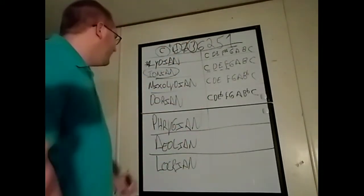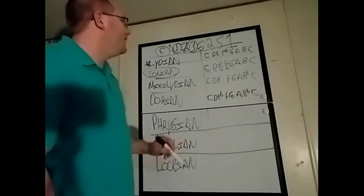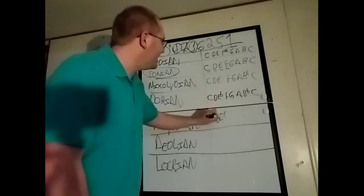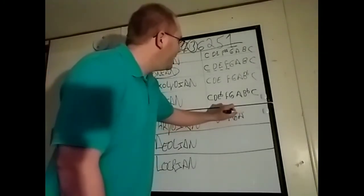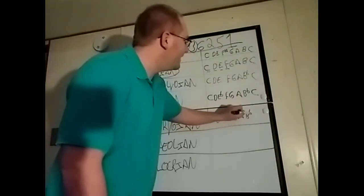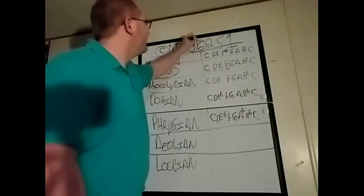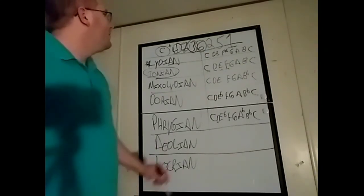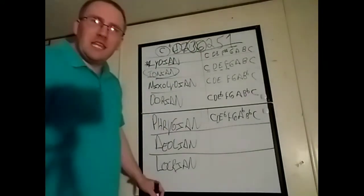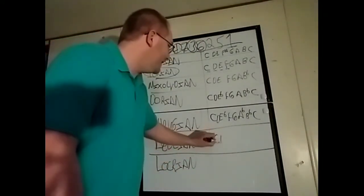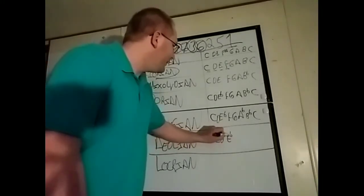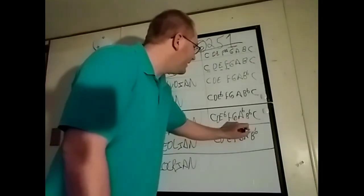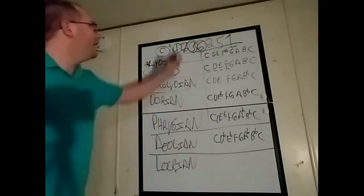Now, we're at the 6, Phrygian. What we need to do is flat the 6. So, we have C, D, E flat, F, G, A flat, B flat, C. It takes care of that 6. Now, we have Aeolian, which we have to flat the 2. So, we have C, D flat, E flat, F, G, A flat, B flat, C. That took care of the 2.